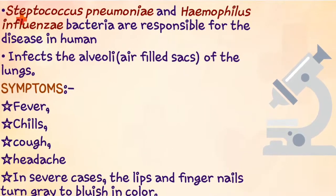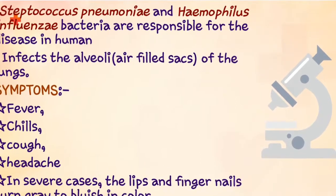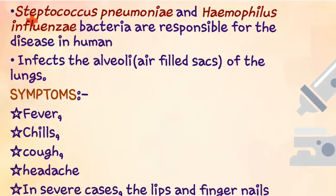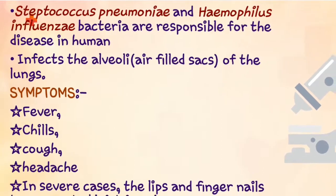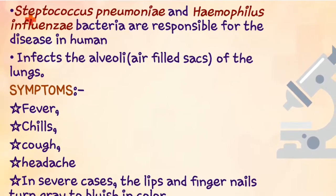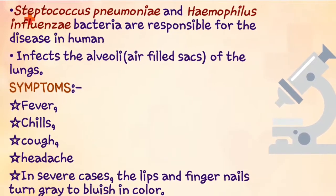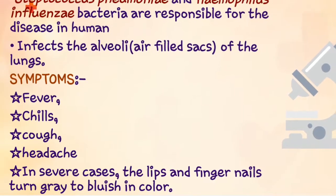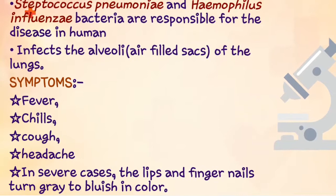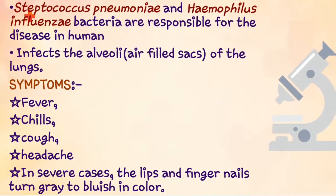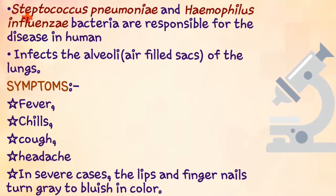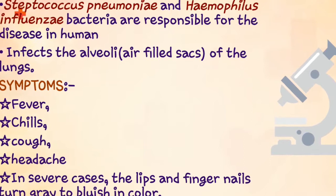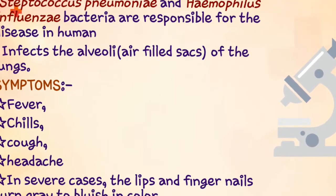The next disease is Pneumonia, which is caused by bacteria like Streptococcus pneumoniae and Haemophilus influenzae. Pneumonia affects the lung alveoli, which are air-filled sacs. Due to this infection, alveoli get filled with fluid leading to respiration problems. Symptoms include fever, chills, cough, and headache. A healthy person can get this disease by inhaling droplets or aerosol released by an infected person, or even by sharing glasses and utensils with an infected person.